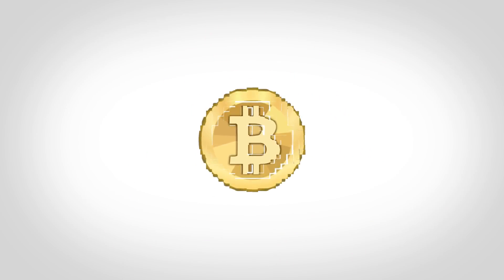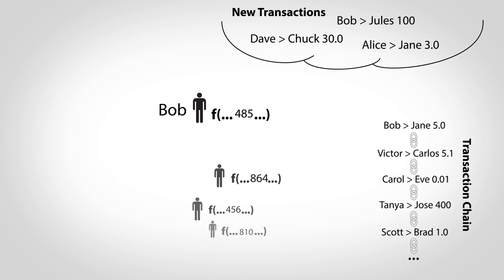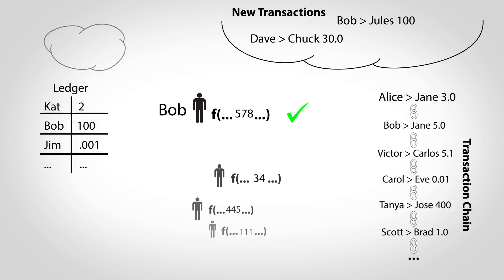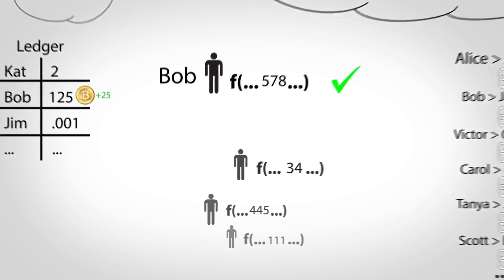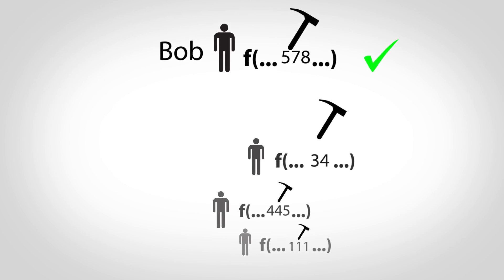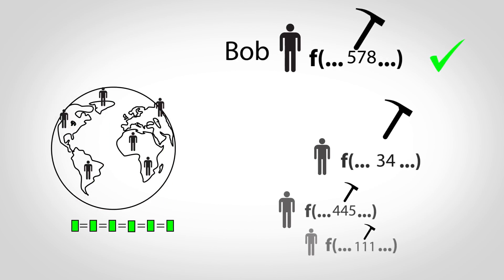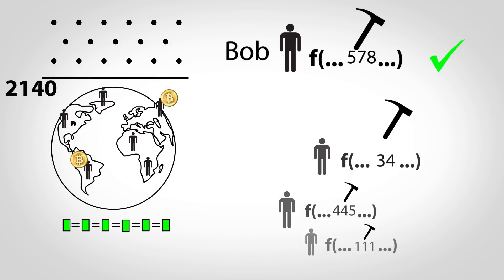Finally, how does money get created? Every time someone wins the lottery to pick the next transaction in the chain, new bitcoins are created out of thin air and awarded to their account. Solving these problems is commonly called mining, as this is how money enters the system, but the main purpose of the math is to make sure everyone's ledgers agree. The math simply provides a convenient way to randomly distribute money into the world. In fact, sometime around 2140, no more money will be created and participants will only be paid from fees added onto transactions.